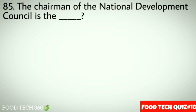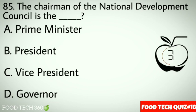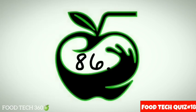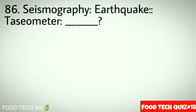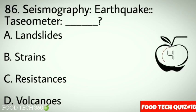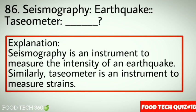Question 86: Seismography is to earthquake as swarm meter is to. Options: A. Landslides, B. Strains, C. Resistance, D. Volcanoes. Correct answer: B. Strains. Explanation: A seismograph is an instrument to measure the intensity of an earthquake. Similarly, a tissometer is an instrument to measure strains.